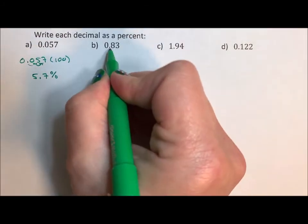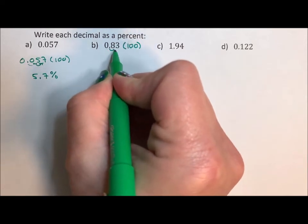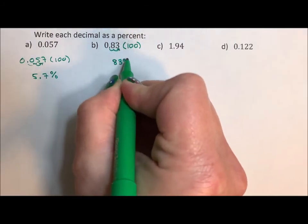If we take 0.83 and multiply by 100, in other words move our decimal point over twice, we get 83 percent.